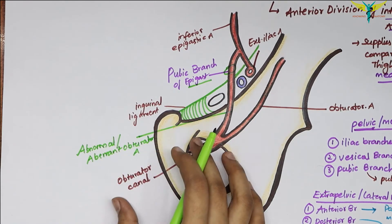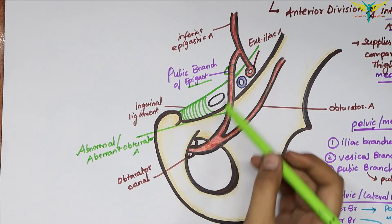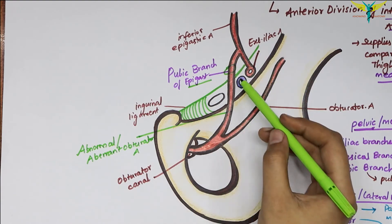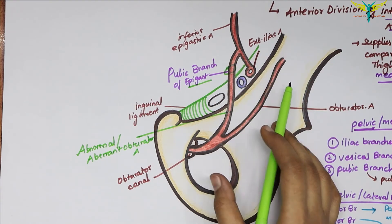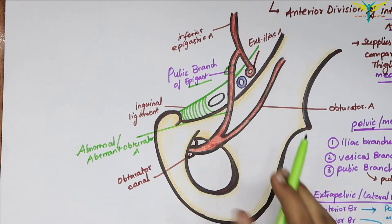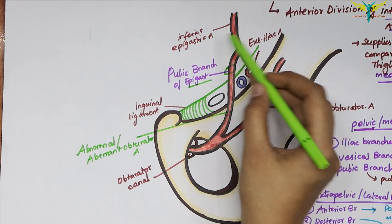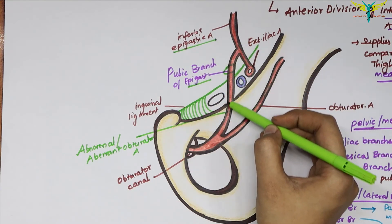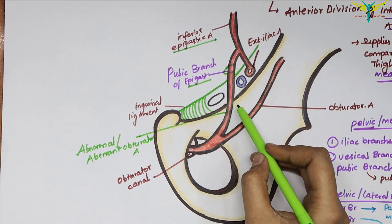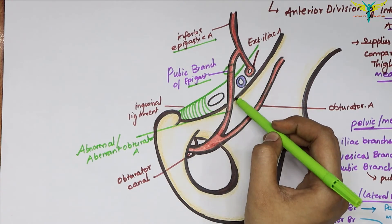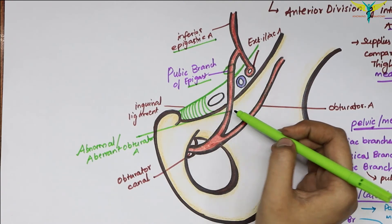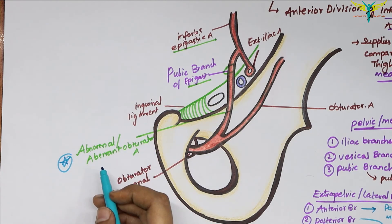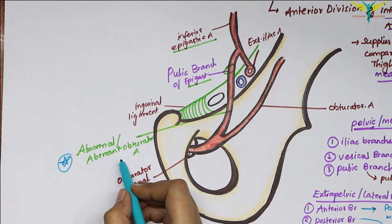Normally the pubic branch of the obturator artery anastomoses with the pubic branch of the inferior epigastric artery, but sometimes this anastomosis is so large and well-developed that the obturator artery appears to be a branch of the inferior epigastric artery. Due to the large and well-developed anastomosis, this artery is clinically important because during surgical procedures it can be accidentally injured, causing significant bleeding that is particularly difficult to stop.